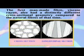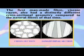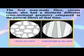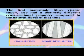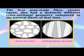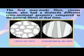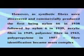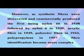The first man-made fiber, Viscose rayon, also had a distinctly different cross-sectional geometry compared to the natural fibers of that time.